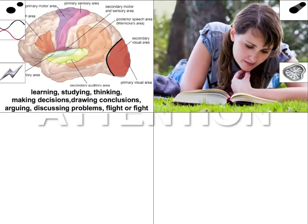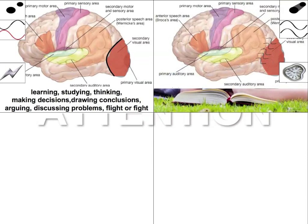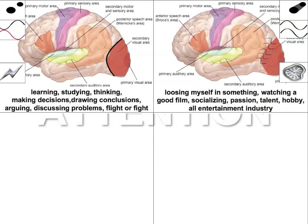According to Dr. Fehmi, when we are immersed there is a synchrony in the brain, which I indicated in this graph as wavy lines. When this style of attention happens, we lose ourselves — for example, watching a good film, socializing with good friends, doing something which we are passionate about. I believe that the whole entertainment industry is based on this style of attention. People are ready to pay a lot of money to help them trigger this style.